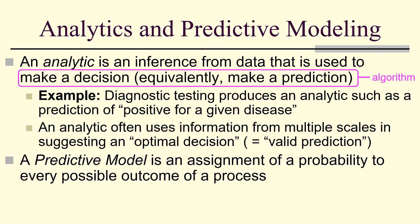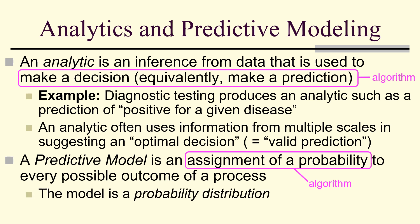A predictive model is an assignment of a probability to every possible outcome of a process. Assigning a probability is an algorithm. The model is a probability distribution. The prediction of the model is an optimal probability distribution.